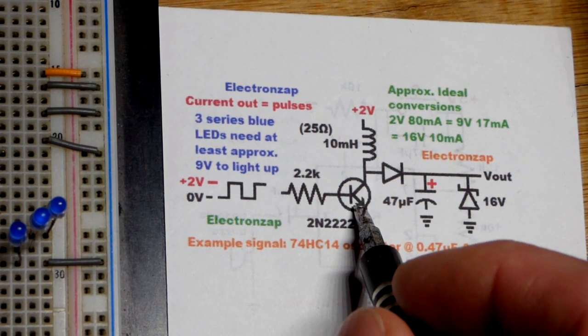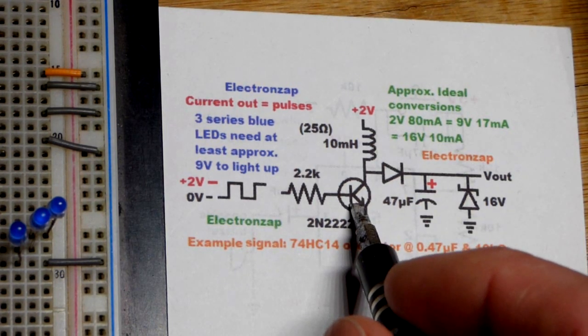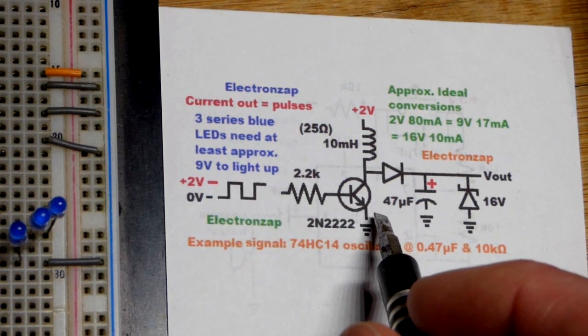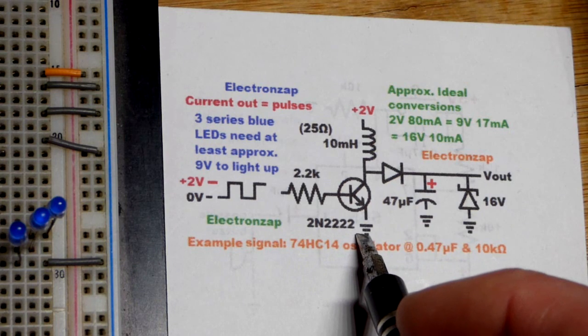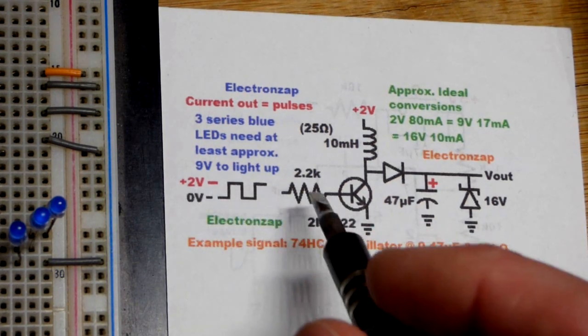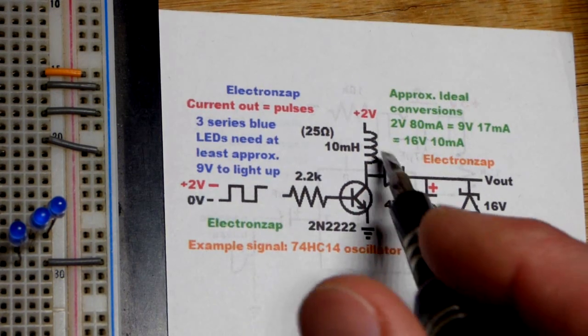Last video, I think it was, we had the transistor being turned on and off by that signal. I was using the 2N3904. The 2N2222 can handle more current. Now, when the output goes high, the transistor turns on.